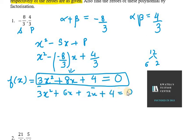We can take 3x common from the first two terms, so we are left with x plus 2, and in the last two terms we have 2, so x plus 2 equals 0. Here we have two terms, that is 3x plus 2 equals 0.